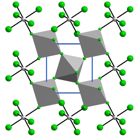Vanadium tetrafluoride is an inorganic compound of vanadium and fluorine. It is a paramagnetic yellow-brown solid that is very hygroscopic. Unlike the corresponding vanadium tetrachloride, the tetrafluoride is not volatile because it adopts a polymeric structure. It decomposes before melting.